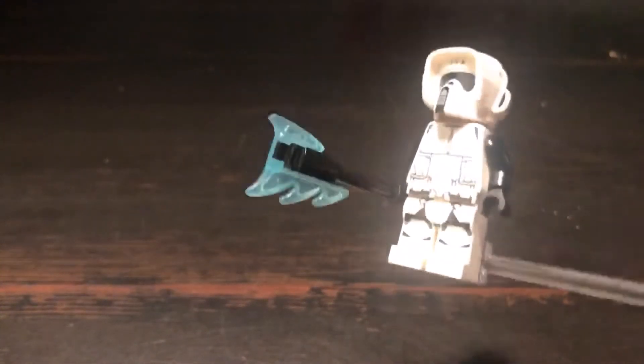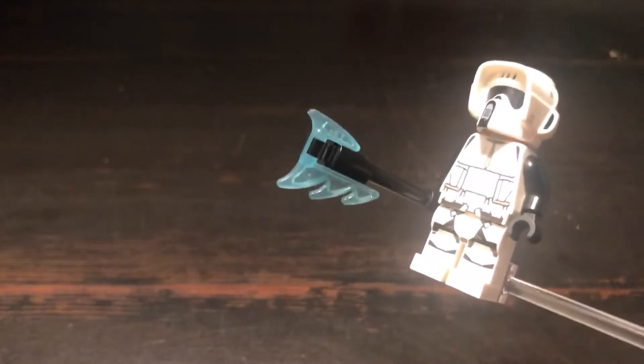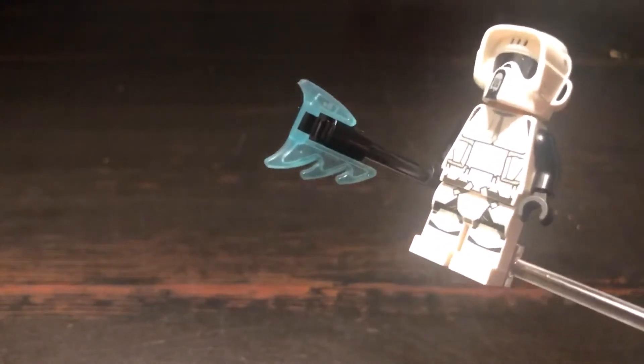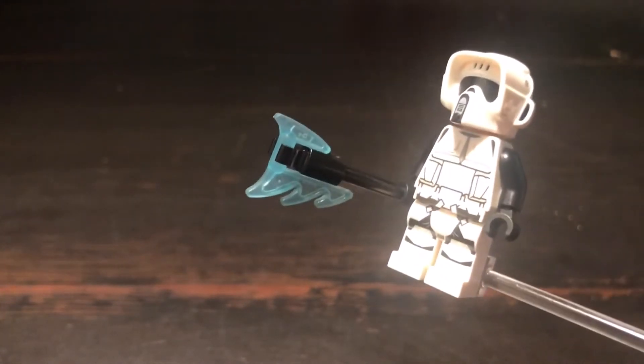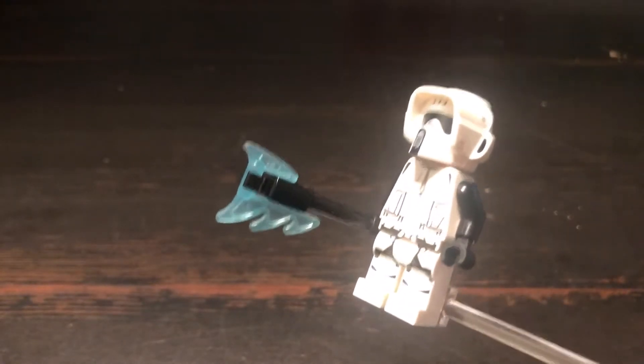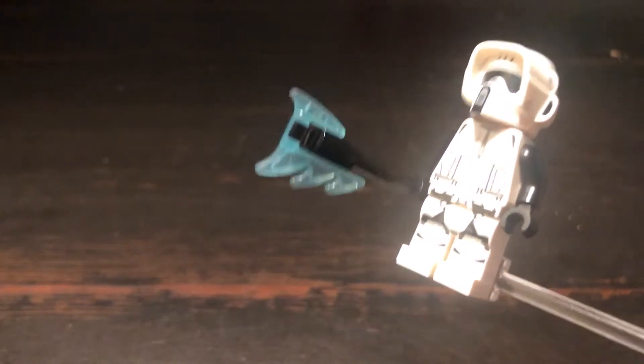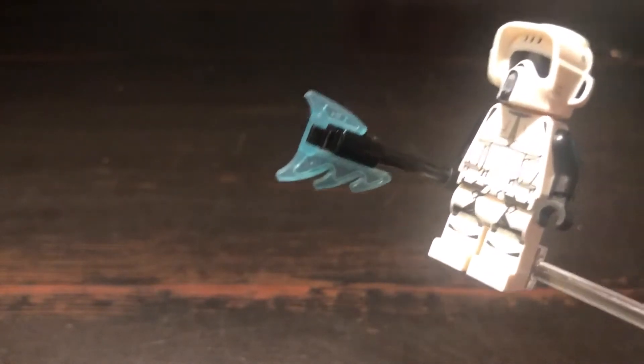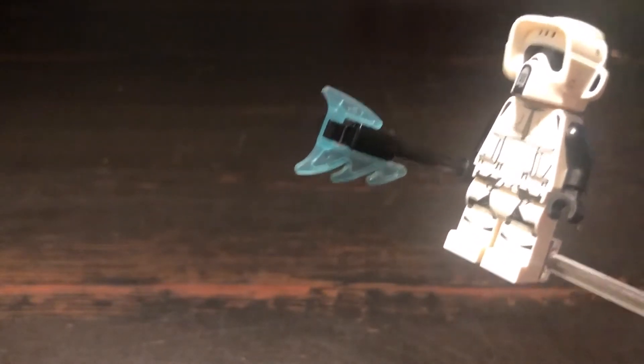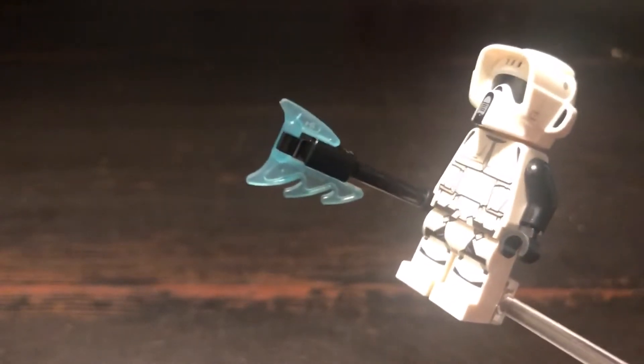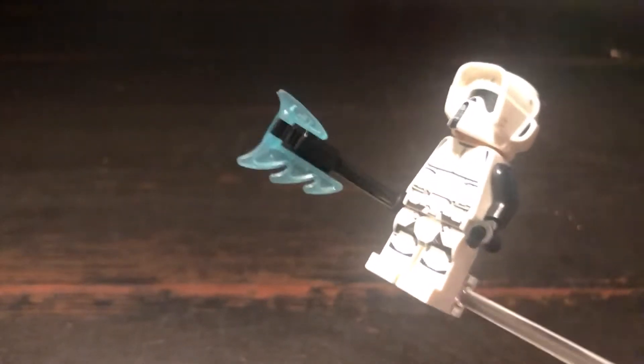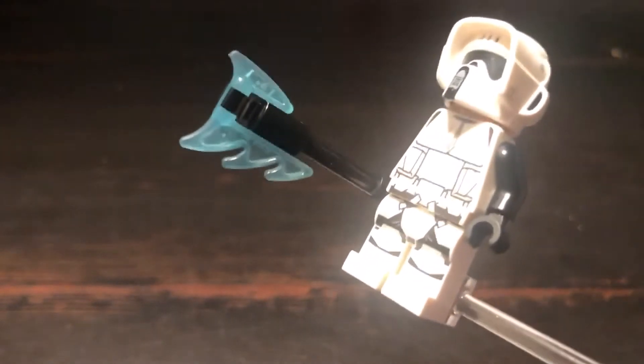So the first customization I have for you is an electro staff from the video game Fallen Jedi, where Cal Kestis is invading an imperial base and he comes across some biker scouts with their little electro staffs. I personally haven't played the game, but I've watched people play it and I've also seen the scene.